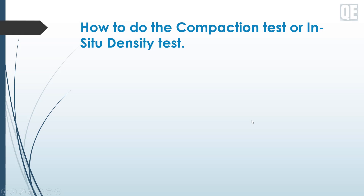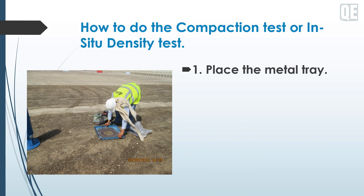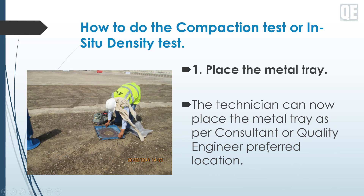Now here is the procedure for how to do the compaction test or in-situ density test. Number one: place the metal tray. The technician can now place the metal tray as per the consultant or quality engineer in your preferred location. As a quality engineer, you should make sure that the area to be tested is compacted and within the area submitted in the inspection request.